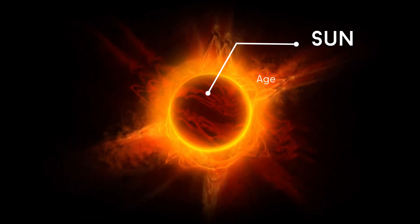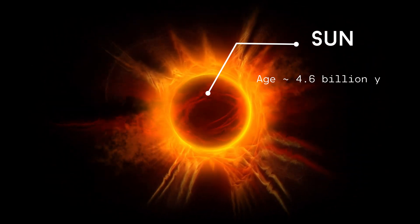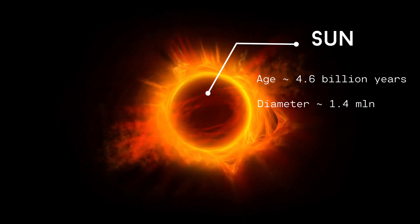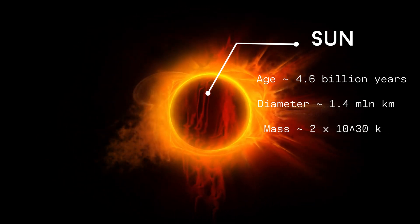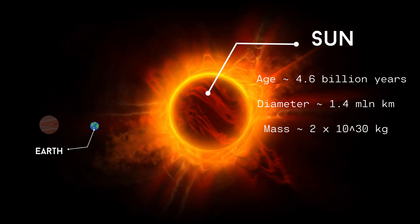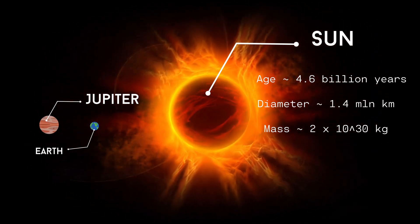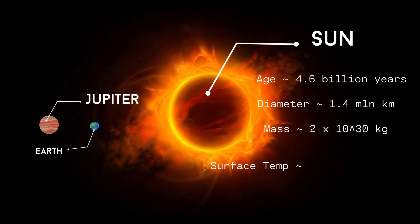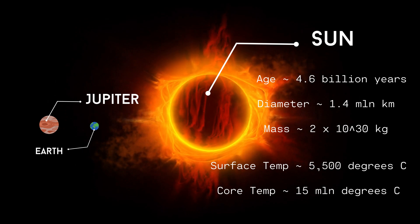The Sun is a massive ball of gas that is approximately 4.6 billion years old. It has a diameter of about 1.4 million kilometers, and its mass is 330,000 times greater than the mass of the Earth. The Sun's surface temperature is around 5,500 degrees Celsius, while its core temperature is around 15 million degrees Celsius.